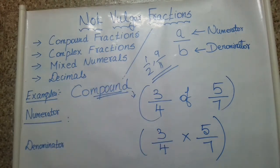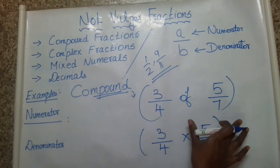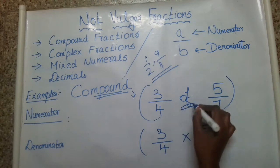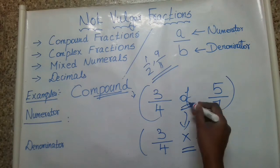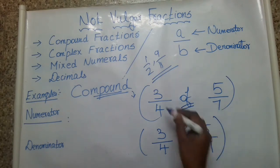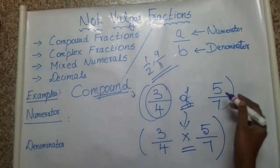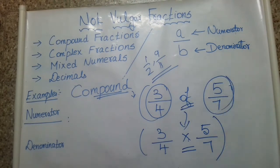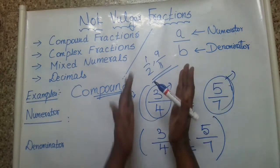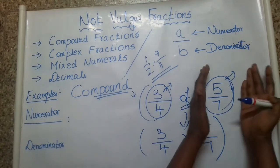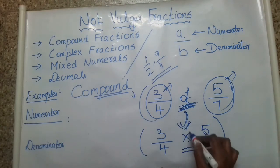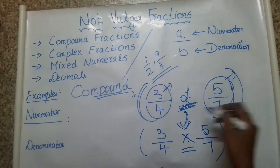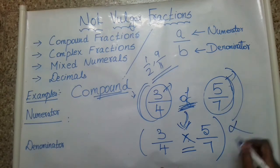Now let's look at compound fractions. Compound fractions are not a vulgar fraction. If you have a fraction or any number of fractions connected with the word 'of' — 'of' corresponds to the multiplication of fractions in its meaning. So the entire thing connected with 'of' meaning multiplication is a compound fraction, which is not a vulgar fraction.